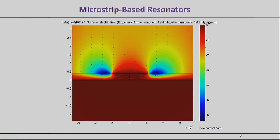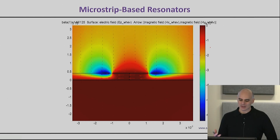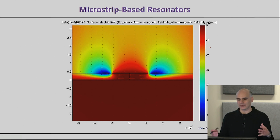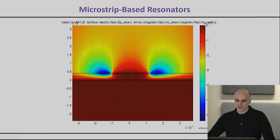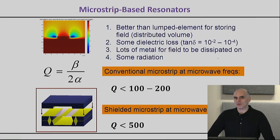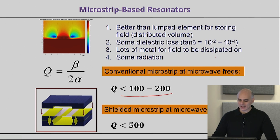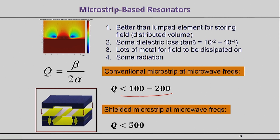The next best choice is to go from a lumped element to a two-dimensional filter — that's the case we've been discussing with microstrip, CPW, or striplines. We make things a little better because we give a reasonable volume for the electromagnetic field to be stored and limit the surface area of metal where it can be dissipated. With a two-dimensional resonator, the quality factor starts improving; you can normally get Q values up to around 200 for most technologies, and with extreme optimized technologies — accounting for radiation and electric loss — you can approach Q values in the order of 500.